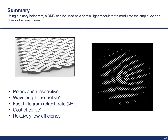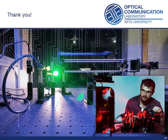In summary, we can use DMDs to effectively modulate three different degrees of freedom of an incoming laser beam: intensity, phase, and to some extent even polarization. DMDs are readily available and quite cost-effective, but unfortunately they have low light efficiency. I hope that you learned something from this talk and maybe even are looking forward to adding a new tool to your experimental arsenal. Thank you very much.